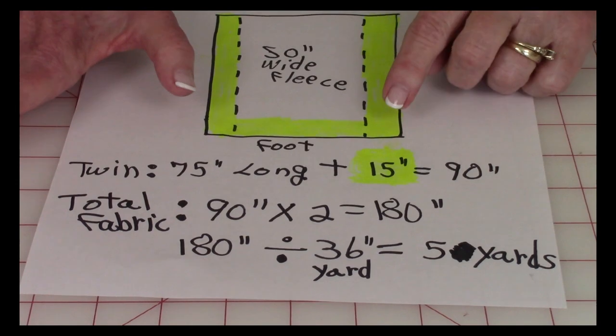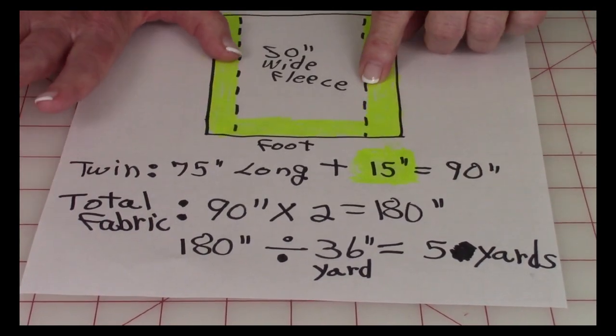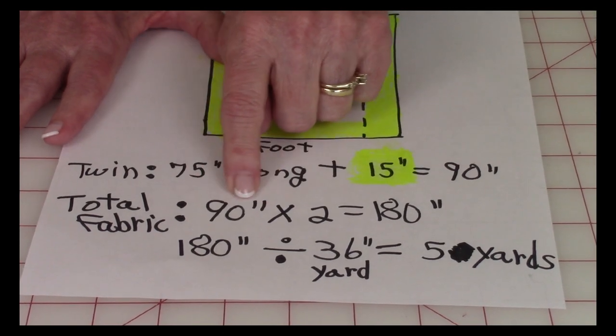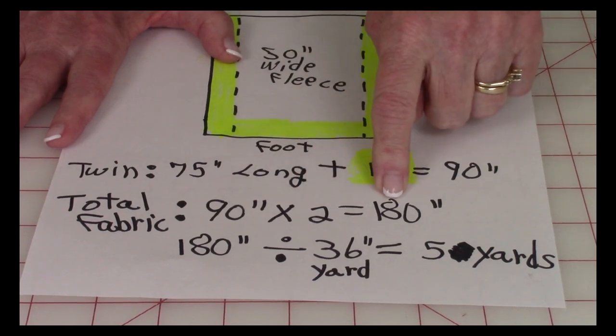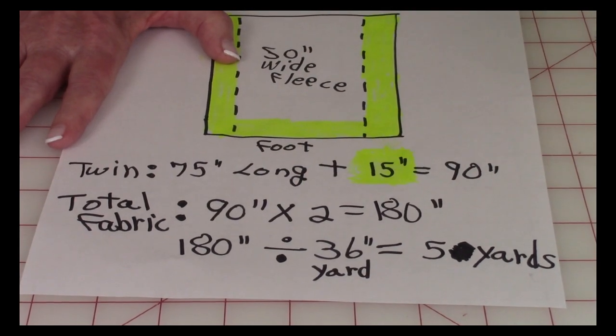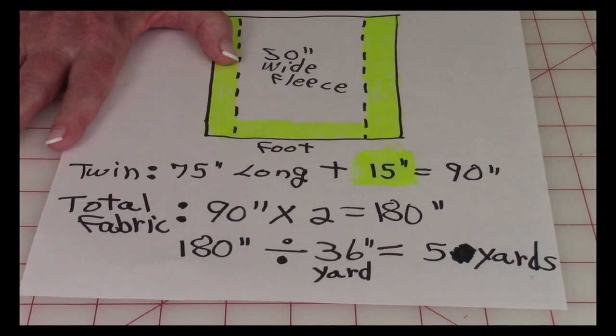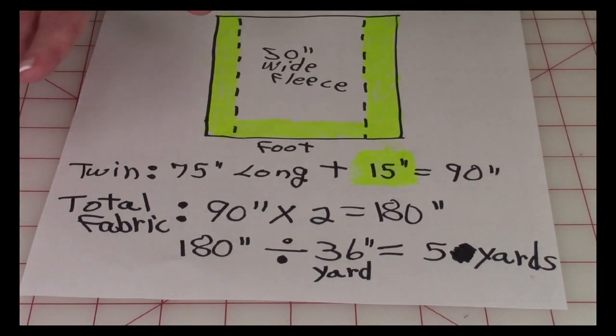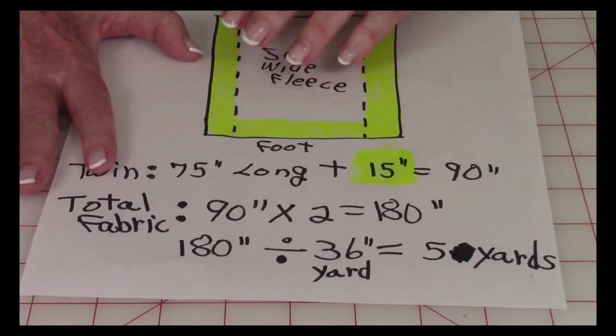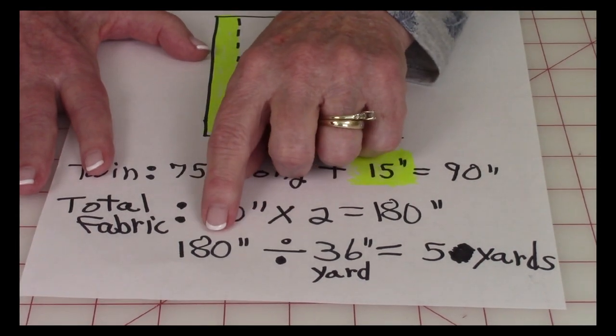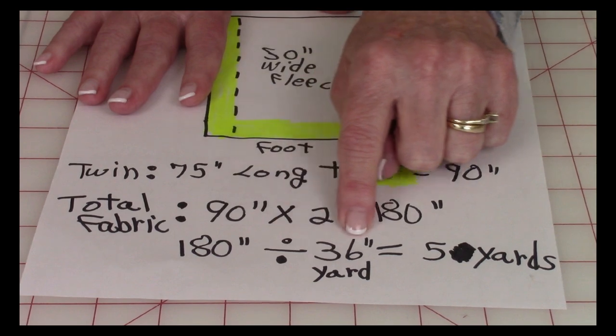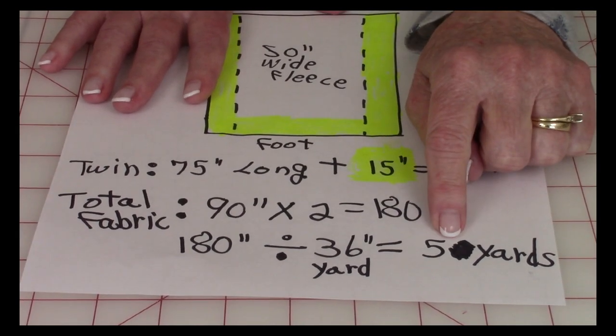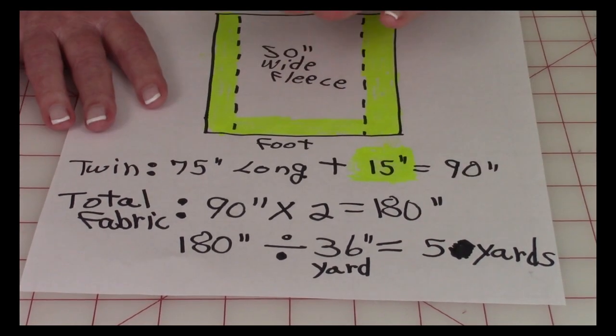Now you need to calculate the amount of fabric for the sides. Take this 90 inches and multiply it times two. That equals 180 inches that you need for that length. Now to calculate all of the yardage that you will need for the top, you're going to take that 180 inches, divide it by 36, that's yards. You're going to need to buy five yards for the top only.